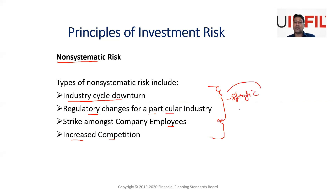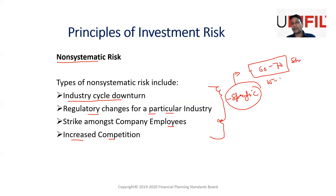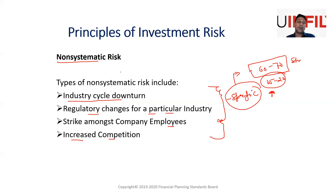All these unsystematic problems are specific and individual in nature — they do not impact the overall economy. You can reduce them by holding a portfolio of 60 to 70 stocks across 20 to 50 sectors. If one sector is in trouble, other sectors may perform well and offset your loss from that underperforming industry. This is how you can reduce your risk through diversification — unsystematic risk can be reduced.